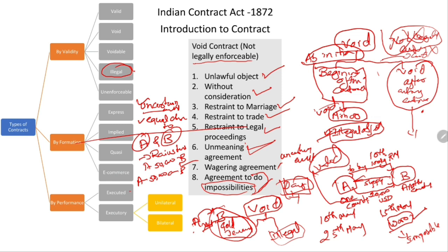Void contracts — certain are void ab initio, meaning void from the very beginning. Certain contracts become void after entering into a contract due to changing circumstances. This is all with respect to void contracts.